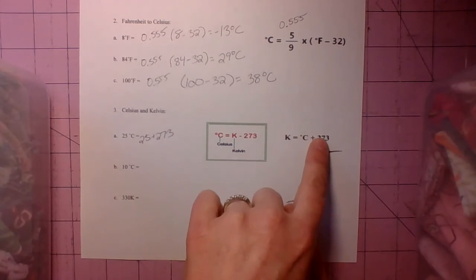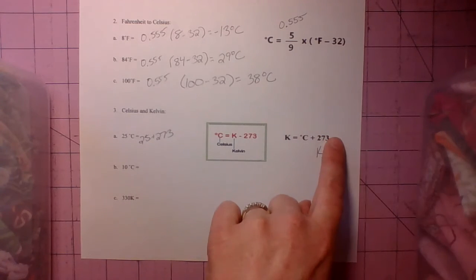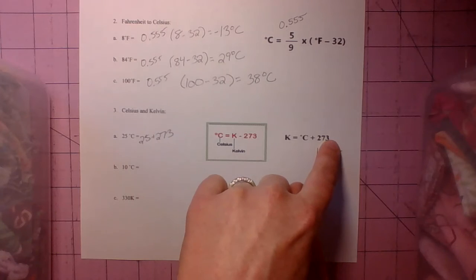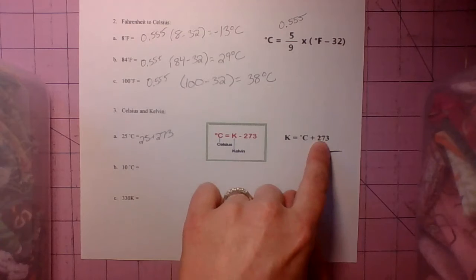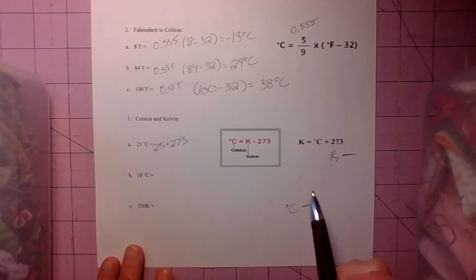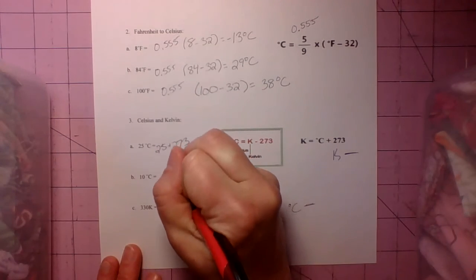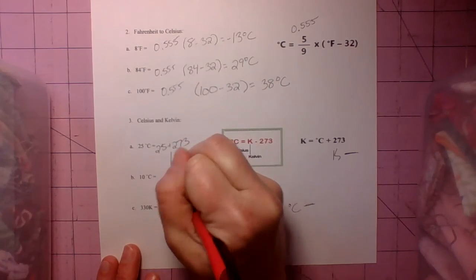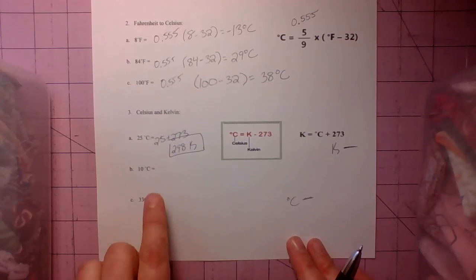If you start with Kelvin and you go down to Celsius, you subtract. You subtract 273 to make it a smaller number. A Celsius number is always smaller than a Kelvin number. So that's how you know whether you add or subtract. So 273 plus 25, that's 298 Kelvin. We notice we end up with a larger number than the Celsius.